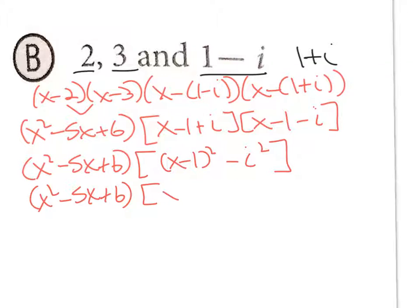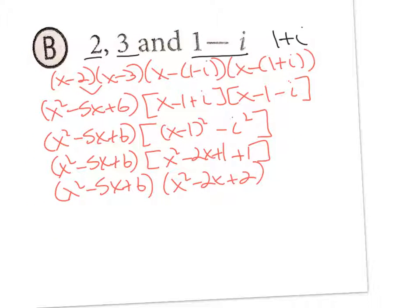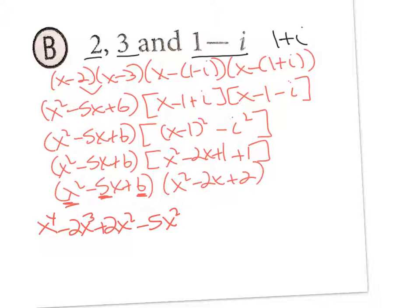Expanding (x − 1)² = x² − 2x + 1, and since i² = −1, subtracting i² means minus (−1) = +1. So (x − 1)² − i² = x² − 2x + 1 + 1 = x² − 2x + 2. Now multiply (x² − 5x + 6)(x² − 2x + 2). Distribute x²: x⁴ − 2x³ + 2x². Distribute −5x: −5x³ + 10x² − 10x. Distribute 6: 6x² − 12x + 12.